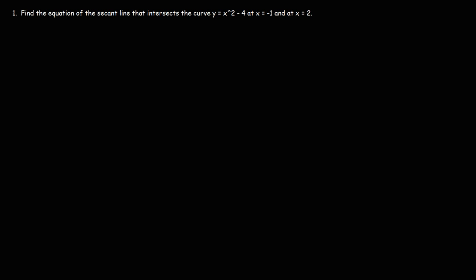Consider this problem. Find the equation of the secant line that intersects the curve y equals x squared minus 4 at x equals negative 1 and at x equals 2. How can we find the equation of a secant line?